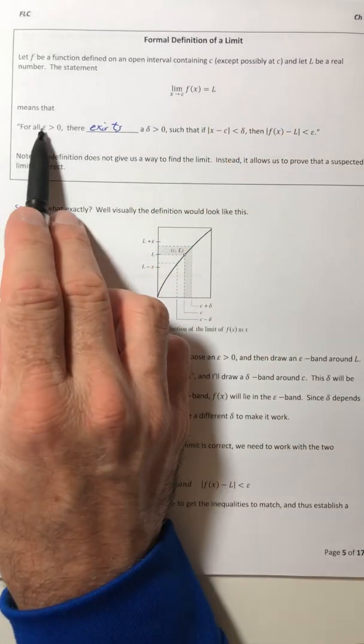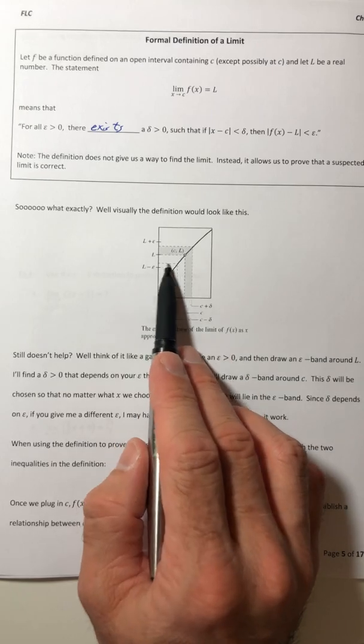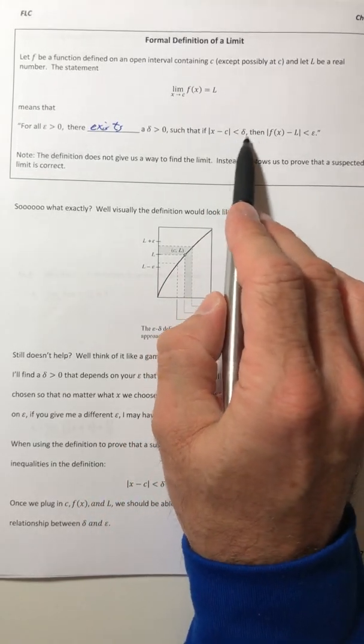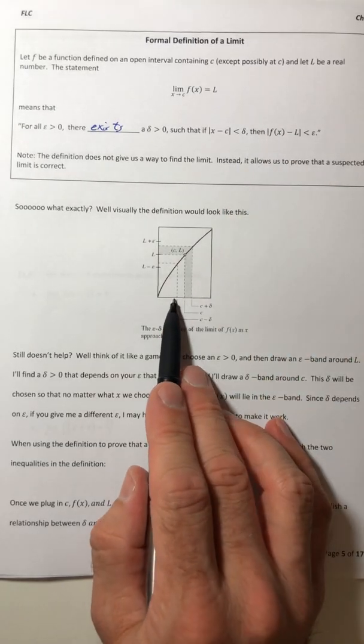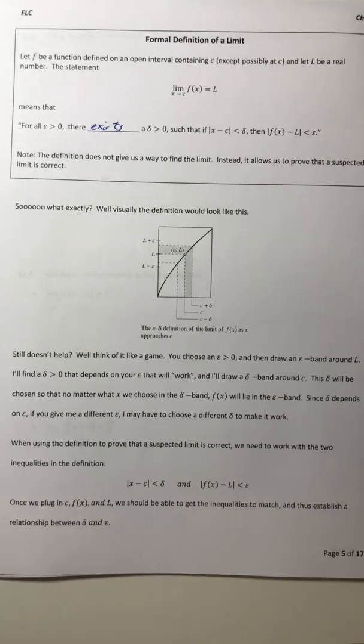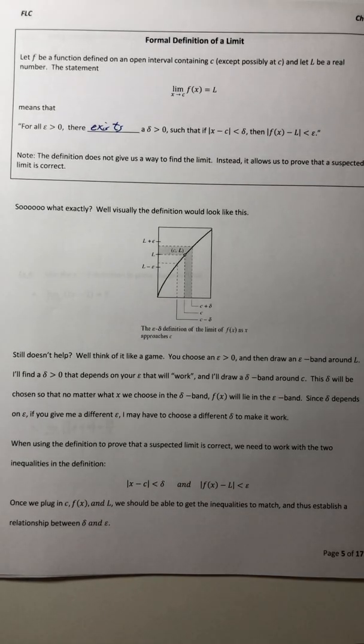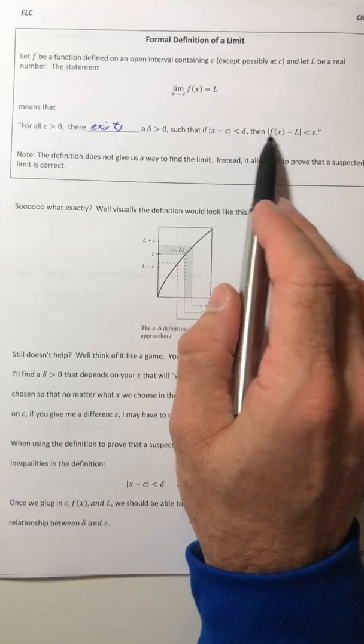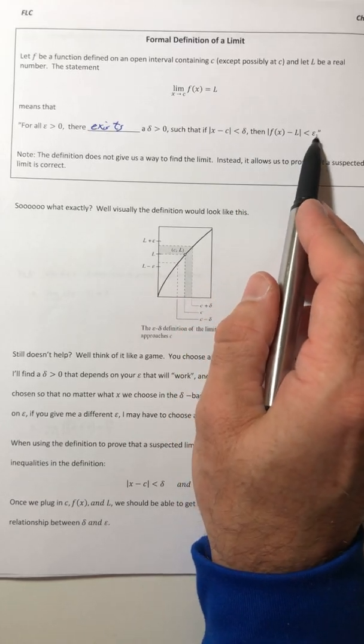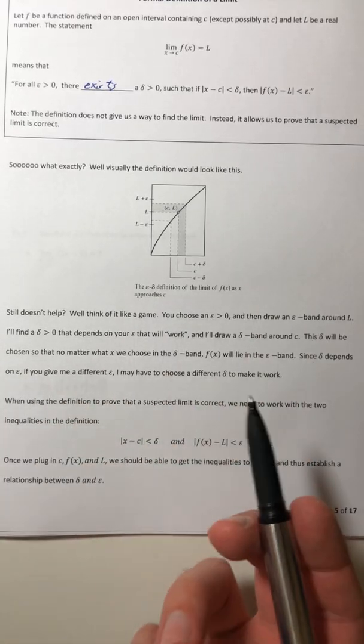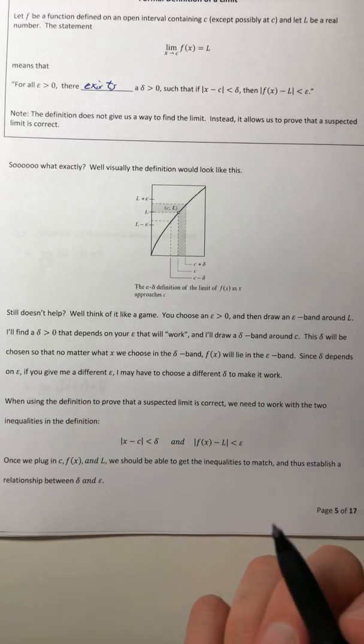So it's saying that no matter what epsilon you choose, there's going to be a corresponding delta that would create a similar band around the C values. So that if you choose whatever delta you pick, that would line up with your corresponding epsilon. That's kind of basically what it just said.